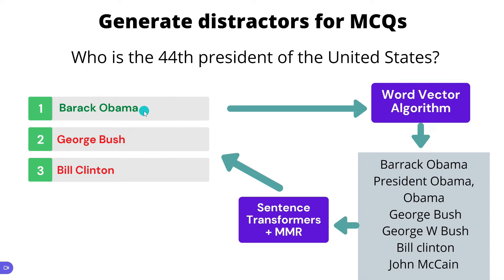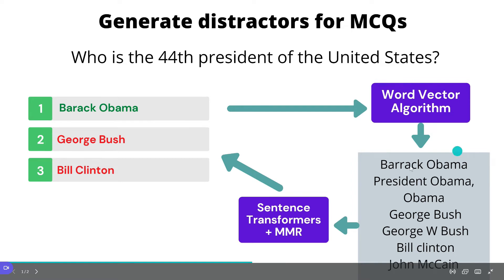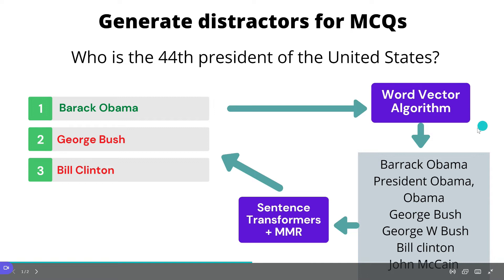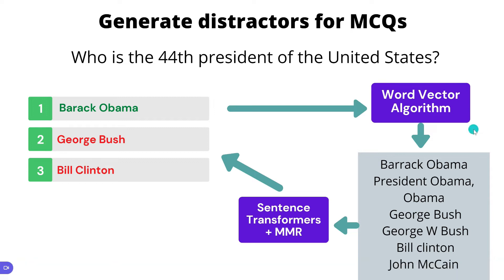One way is to query a word vector algorithm like word2vec, sense2vec, or any similar algorithm with that word. When you search these word vector algorithms with a given keyword you get back similar words — for example, Barack Obama with a double R, President Obama, Obama, George Bush, George W. Bush, Bill Clinton, John McCain, etc. So you get back some relevant keywords that could be potential distractors.